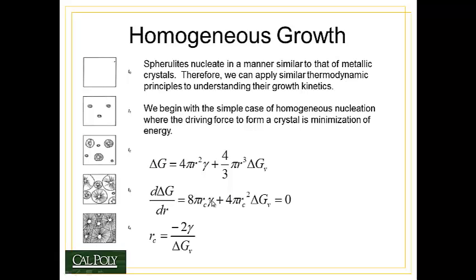Taking the derivative, we get 8πrc·γ + 4πrc²·ΔGv. Deriving this equation further results in calculating that the critical radius for nucleation is equal to -2 times the surface energy of the spherulite divided by the free energy volume of the spherulite.